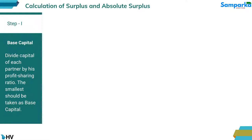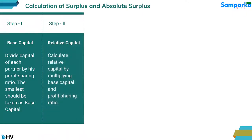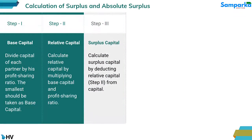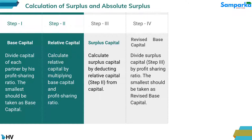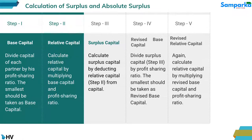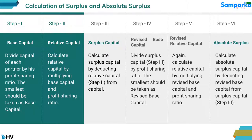Calculation of surplus and absolute surplus: Step 1 — Base Capital: Divide the capital of each partner by their profit-sharing ratio; the smallest should be taken as base capital. Step 2 — Relative Capital: Calculate relative capital by multiplying base capital and profit-sharing ratio. Step 3 — Surplus Capital: Calculate surplus capital by deducting relative capital (Step 2) from capital. Step 4 — Revised Base Capital: Divide surplus capital (Step 3) by profit-sharing ratio; the smallest should be taken as revised base capital. Step 5 — Revised Relative Capital: Calculate relative capital by multiplying revised base capital and profit-sharing ratio. Step 6 — Absolute Surplus: Calculate absolute surplus capital by deducting revised base capital from surplus capital (Step 3).